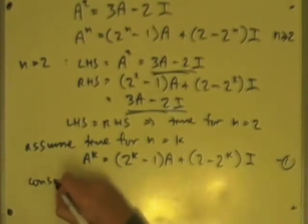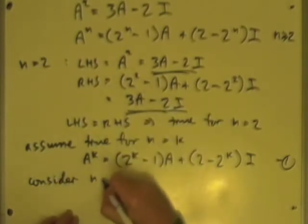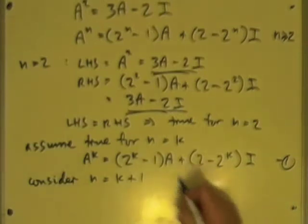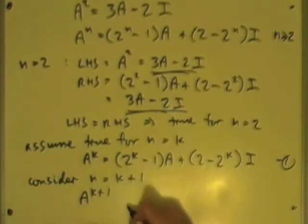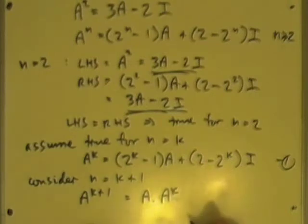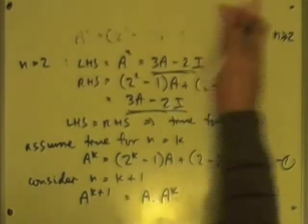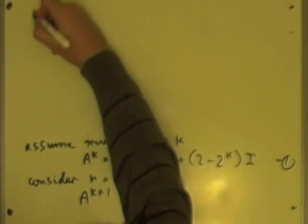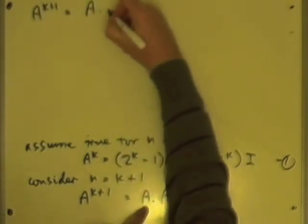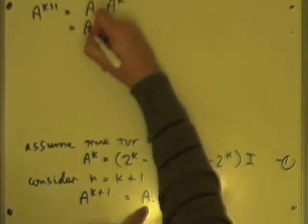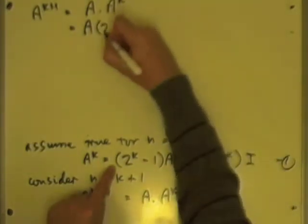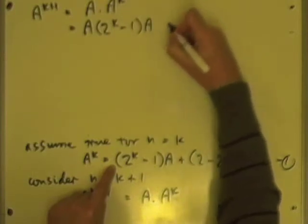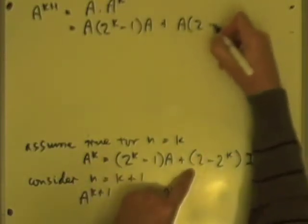Then consider n equals k plus 1. This means I have A to the k plus 1, which equals A times A to the k. Now using the inductive hypothesis straight away, A to the k plus 1 equals A times whatever A to the k equals — that is, A times 2 to the k minus 1 times A, plus A times 2 minus 2 to the k times I.